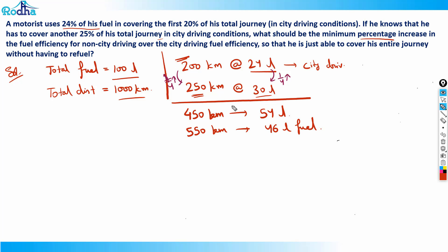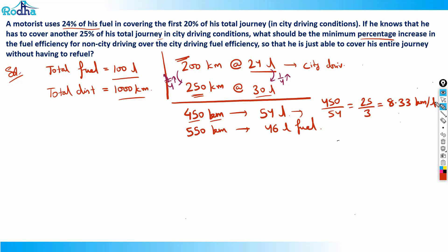Let's find the fuel efficiency. For the city driving portion: 450 km at 54 liters. Fuel efficiency = 450 ÷ 54. Simplifying: 225/27, then 75/9, then 25/3, which equals approximately 8.33 km per liter. So 8.33 km per liter is the city driving fuel efficiency.